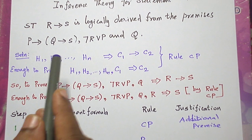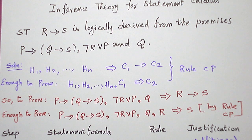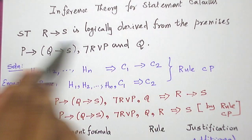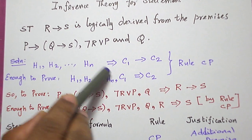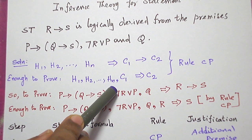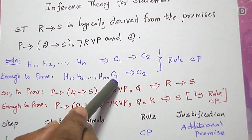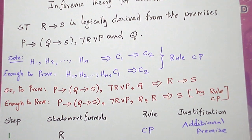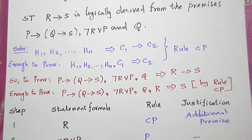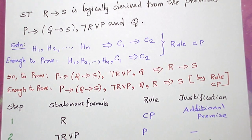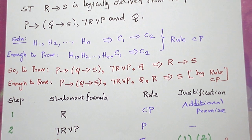What is rule CP? Suppose we have N premises and the conclusion itself is of the form C1 conditional C2. For proving this statement, it is enough to take the given N premises as they are, along with the left hand side of the conclusion as an additional premise C1. When these N+1 premises are combined, we will get the right hand side C2. This is rule CP.